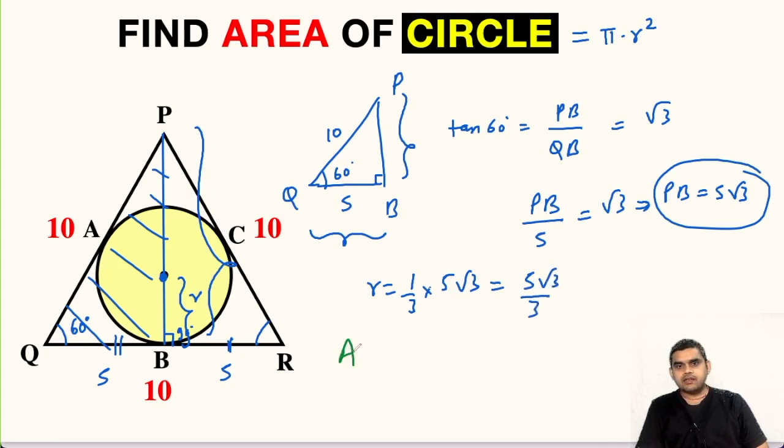So area of this circle will be pi times 5 root 3 divided by 3 whole square which is pi times 25 times 3 upon 9. 3 and 3 cancelled. So this will be 25 pi upon 3 square units.